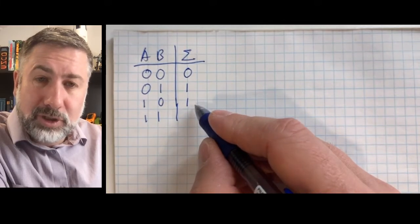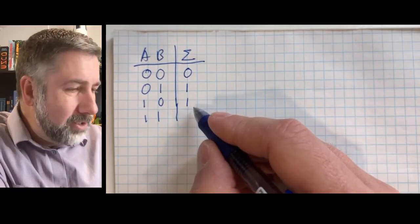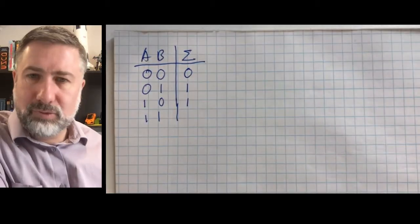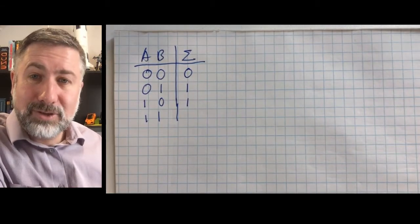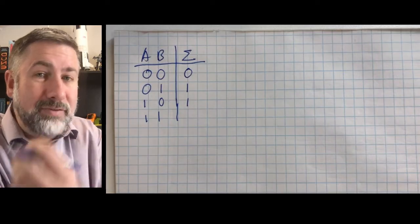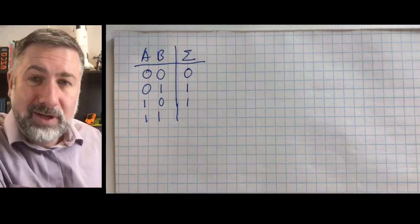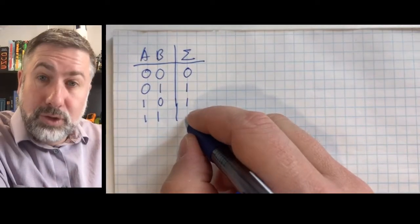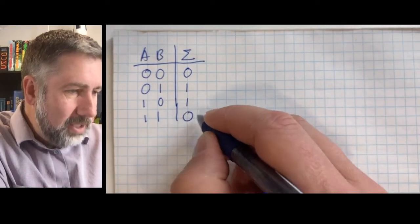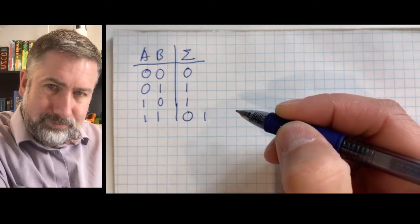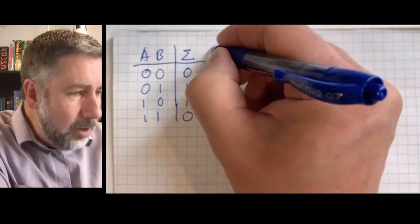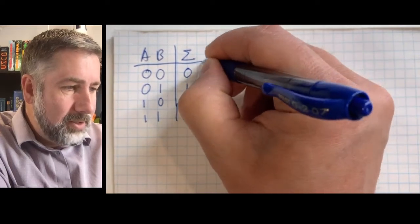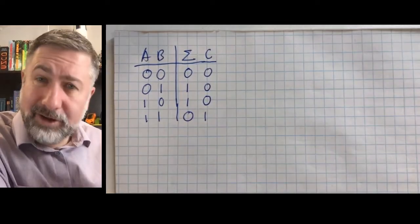And one plus one is two, but we can't put two in the column. So we have to find some other way to do this. If you remember back to grade three math, when you're adding two numbers together, if the result is too big to fit in the column — if it's ten or more — then you carry the one to the next column. We'll do the same thing here. So two is in fact going to be zero, carry the one.